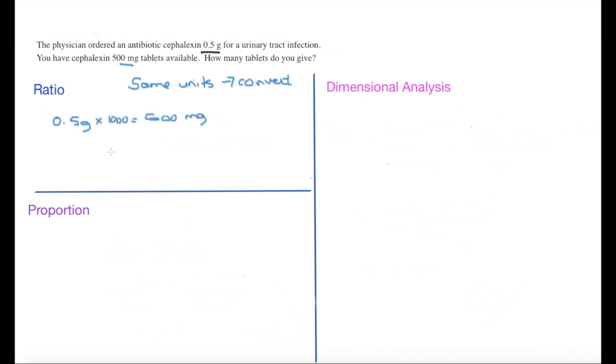And then I can use my ratios and proportions. So 0.5 grams times 1000 is equal to 500 milligrams. I now know that the dose required is the same as the dose available, so I'm going to give one tablet.